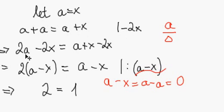And then we subtract 2x on both sides. We get 2a minus 2x equals a minus x, as this is the same.